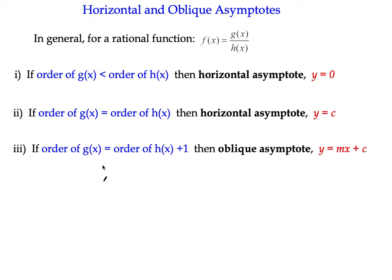It's either a horizontal asymptote or what we call an oblique asymptote - that is an asymptote which has a gradient to it which is not zero.